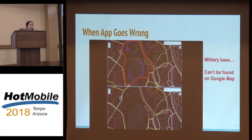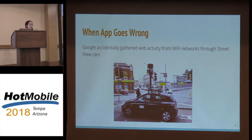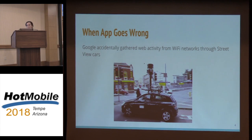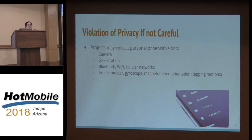And then, remember a few years back, Google accidentally gathered some sensitive data — the web activity from WiFi networks when their Street View cars were driving around. There's nothing against Google; this is just an example. From these examples, we can tell privacy violations can occur if we are not careful.